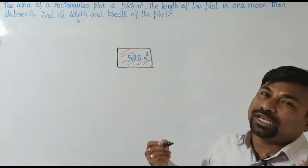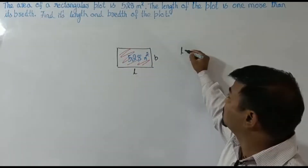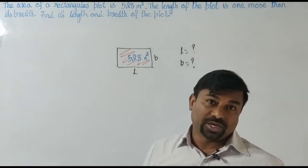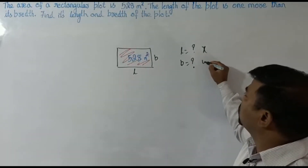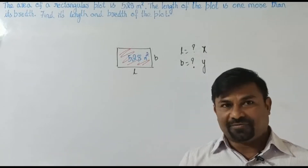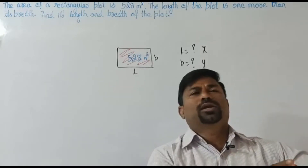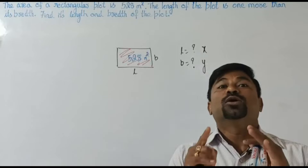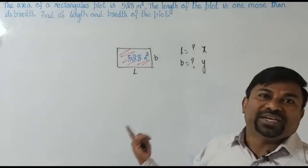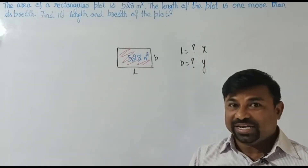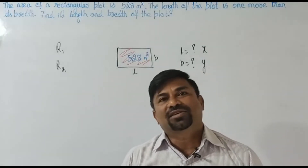The next relation: the length of the plot is one more than its breadth. Find the length and breadth of the plot. So what are the two relations he has given and what is he asking? There are two unknowns — length and breadth — so we need two relations. As there are two unknowns, don't jump to say it's linear under two variables — there's a chance it's quadratic under one variable.